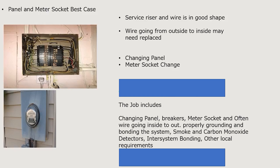Scenario two is the panel and meter socket — we'll call this our best case scenario, though there are variants that could exponentially increase cost. We assume the service riser and wire are in good shape, though the wire going from inside to outside may need to be replaced. This job includes the panel change, breakers, meter socket, often the wire from inside to outside, properly grounding and bonding the system, smoke and carbon monoxide detectors, inter-system bonding strip, and other local code requirements. Estimated labor: $2,200 to $3,500. Estimated material: $1,000 to $2,500.